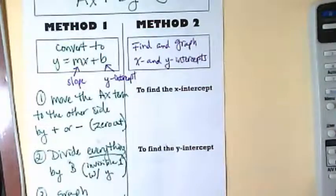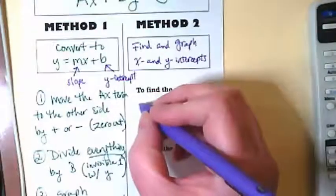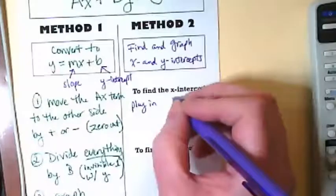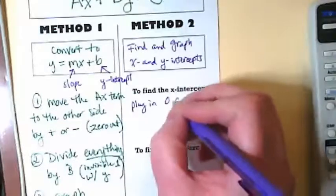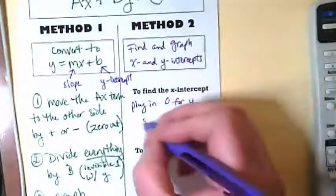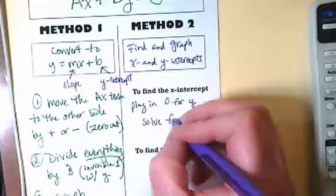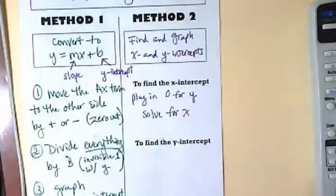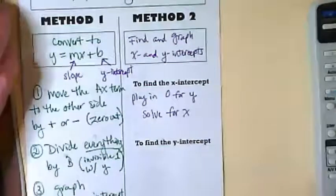So to find the x-intercept, we're going to plug in 0 for y and solve for x. Right now, we're just going to get these steps written down, and then we will do a few examples together, so this makes sense to you all in a minute.